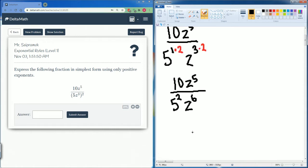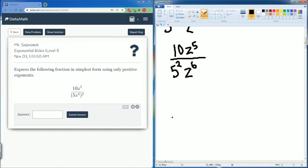Alright let's simplify. Let's break this down into the number and the variable. So the number here is just 10 divided by 5 to the second power and the variable is z to the fifth and z to the sixth.